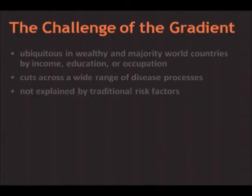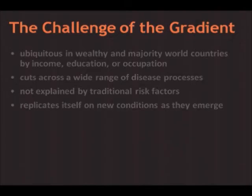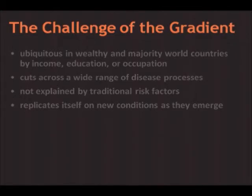Generally, what we showed for coronary heart disease holds for other conditions: the gradient appears inherent in social position and cannot be easily explained by disease-specific risk factors. Going back 100 years, the gradient loaded on infectious diseases; heart disease entered society through the privileged and settled into a gradient by the 1950s; HIV/AIDS has settled into a gradient pattern from the 1980s to the present. The gradient replicates itself on new conditions as they emerge, and occurs among both males and females — males loading more on things that kill you, women on things that make you sick.